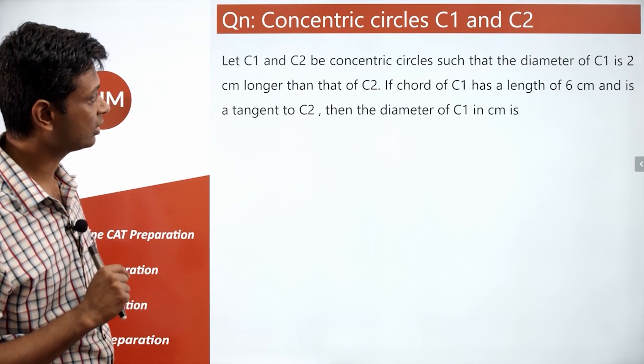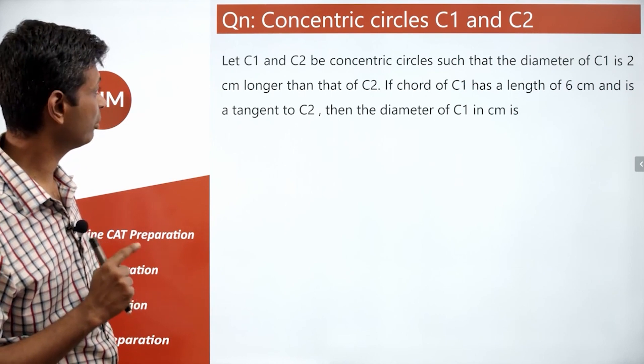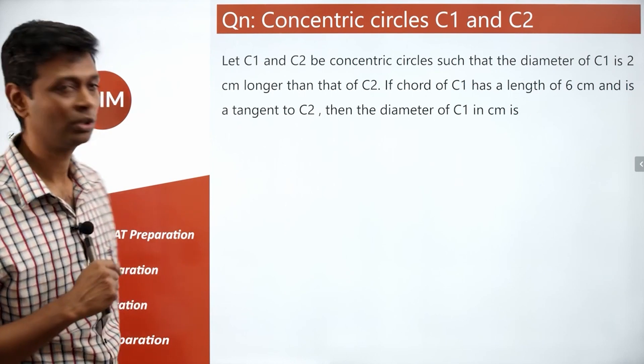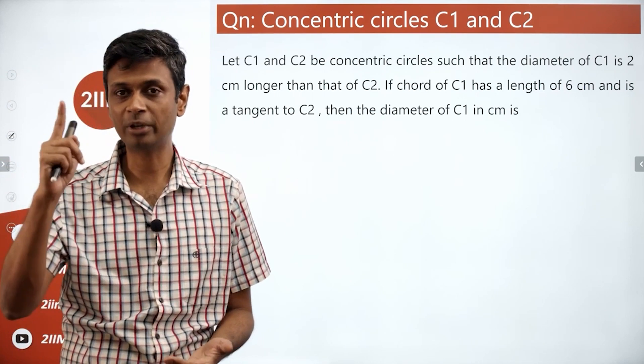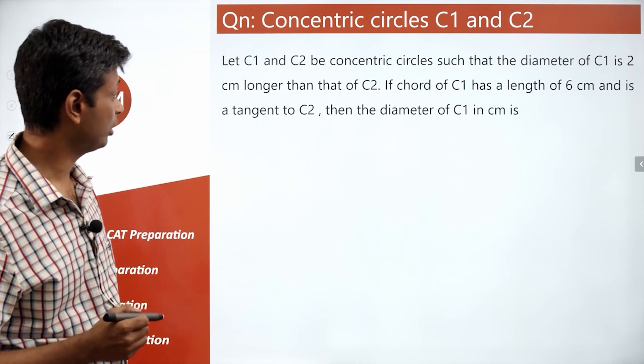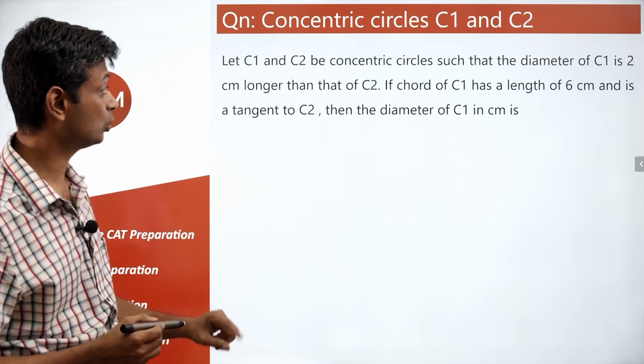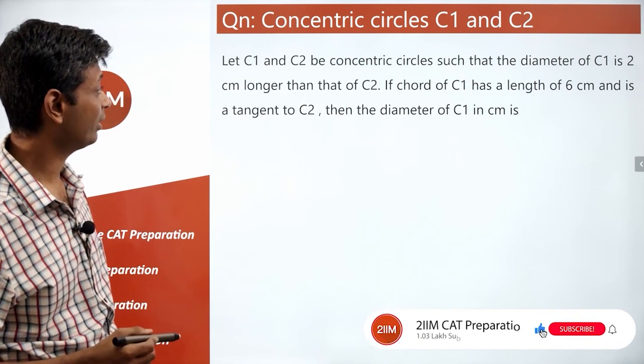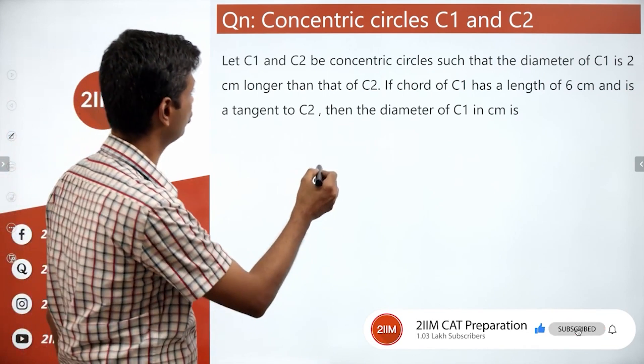C1 and C2 be concentric circles such that the diameter of C1 is 2 cm longer than that of C2, or the radius of C1 is 1 cm longer than that of C2. If a chord of C1 has a length of 6 cm and is tangent to C2, then the chord of C1 is 6 cm and tangent to C2.